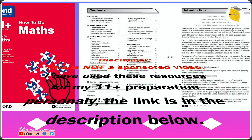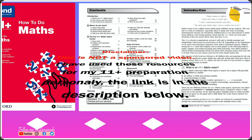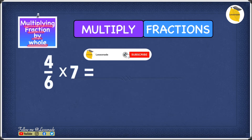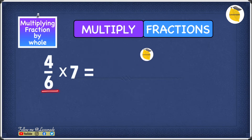Now let's look at how to multiply a fraction by a whole number. In this example we have 4 over 6, which is a fraction, and we're going to multiply it by 7, which is a whole number. Step one is to convert the whole number 7 into a fraction.